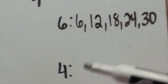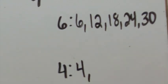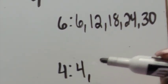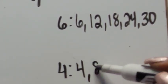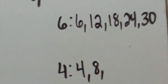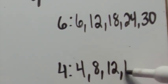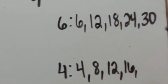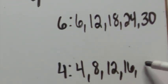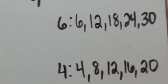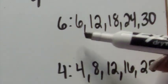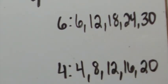For four, we start with four because four times one is four, four times two is eight, four times three would be twelve, and so forth. We keep going — we would get sixteen next and twenty. So with what we have so far, do they have anything in common?